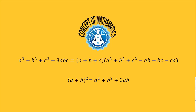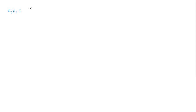Hi guys, welcome to Concept of Mathematics. Today I will show how to factor a³+b³+c³-3abc, and also I will show that (a+b)² equals a²+b²+2ab. So let us start. Suppose a, b, and c are the roots of a cubic polynomial f(x).